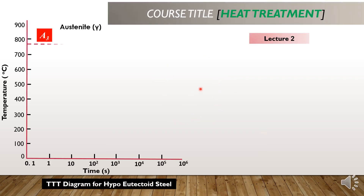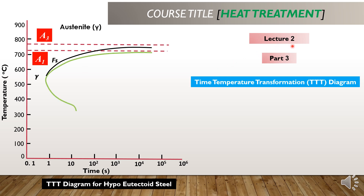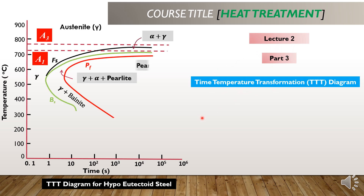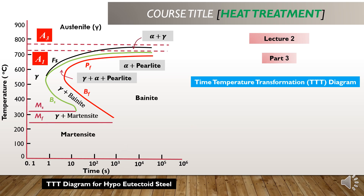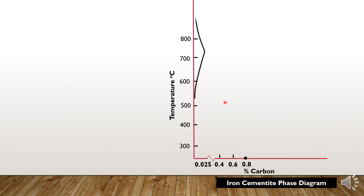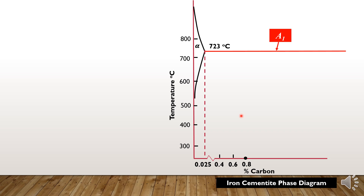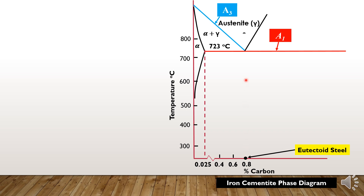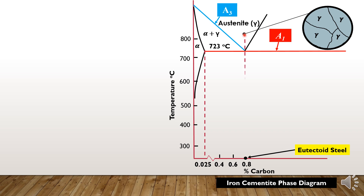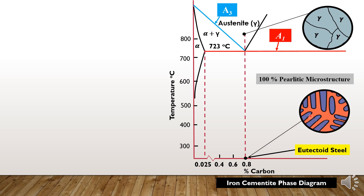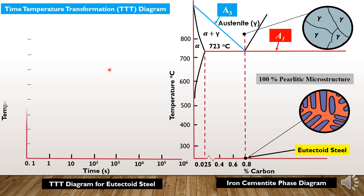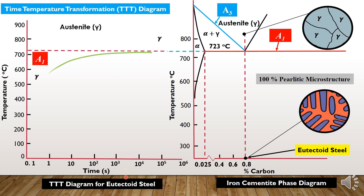Welcome to the world of materials conceptual study. This is lecture 2, part 3: time-temperature transformation diagram for the hypo-eutectoid steel. So far, we have seen that in the iron-cementite phase diagram, if we have eutectoid steel and cool it down from the fully austenite temperature range to room temperature, we get 100% pearlitic microstructure. We have also studied the TTT diagram for the eutectoid steel.